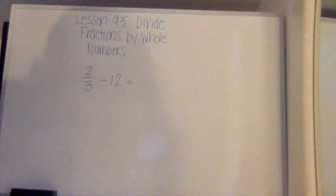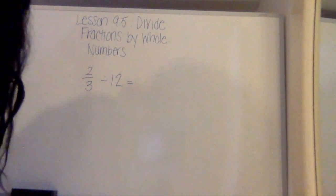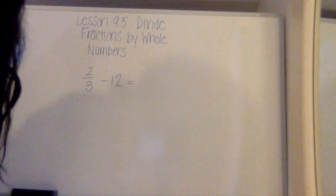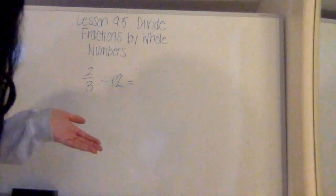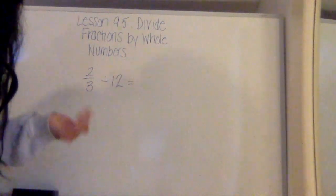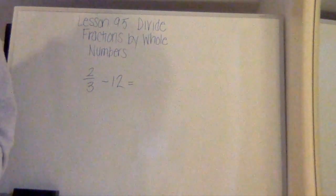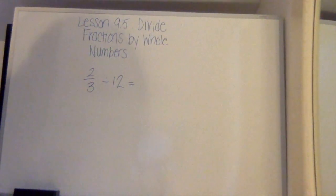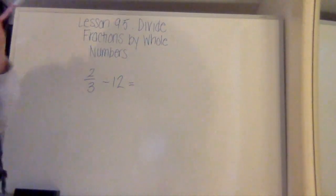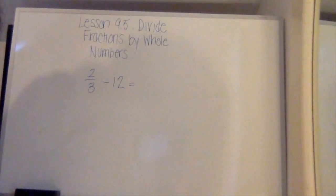So first we're starting out with our first question in your packet. You're given a model, a tape diagram, to model the question that has to do with the recycling plant. So what we're trying to do is we're trying to figure out 2/3 divided by 12. You can take a look at the modeling example yourself. I'm going to show you the way that we've been doing it in class.